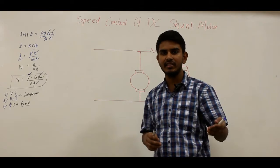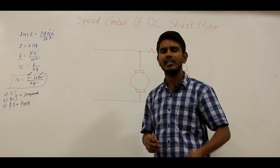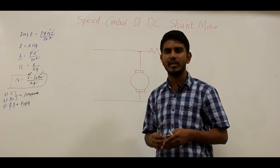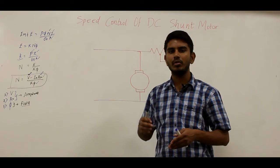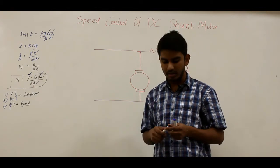If we distinguish speed regulation from speed control: speed regulation is a natural change in speed of the shaft due to application of load, whereas in speed control we are intentionally changing the speed to achieve some specific work process.